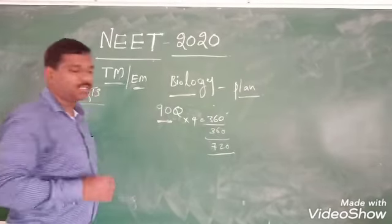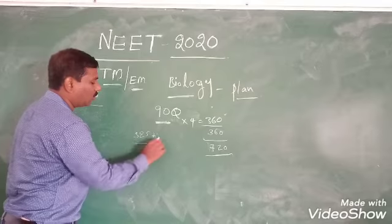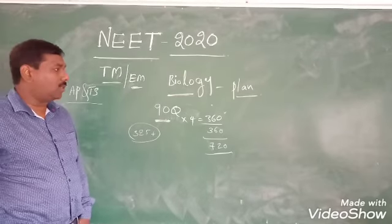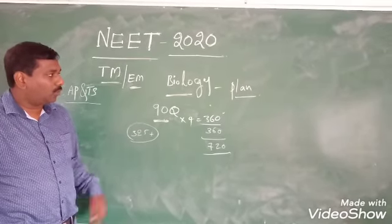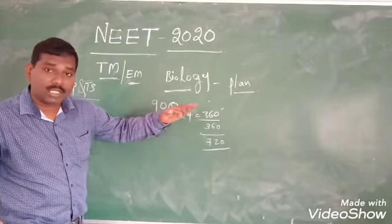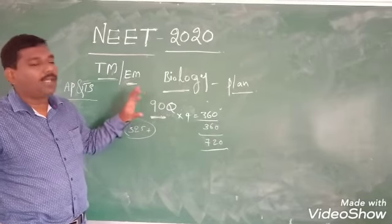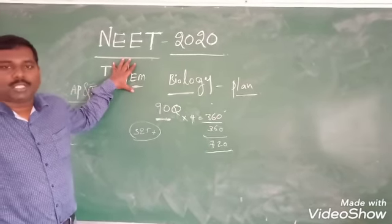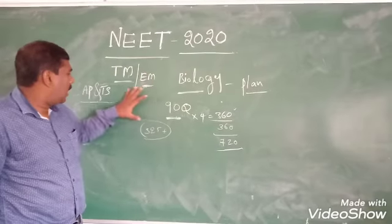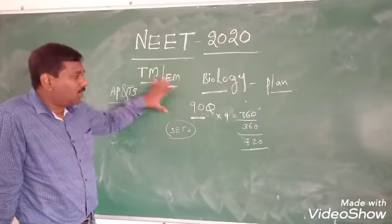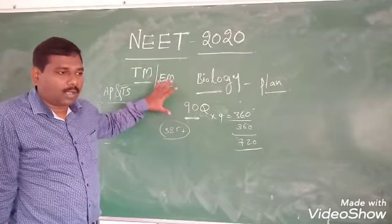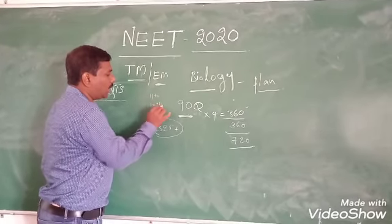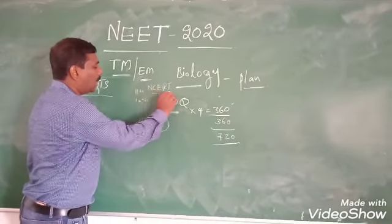Total NEET exam is 720 marks. Biology is 360 marks. We are understanding this information. The main source is NCERT books, so I would have questions about NCERT. The NCERT book must be completed.